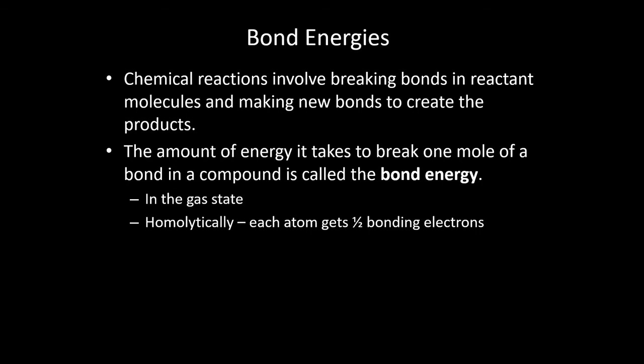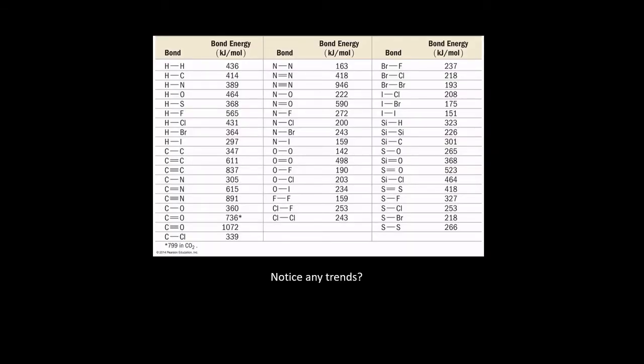And so if we look at some bond energies here, at first it just looks like a whole bunch of massive numbers and letters. But we can find some trends here. There's one trend in particular that is easy to see. So for example, if we look at these three bonds here: carbon-carbon single, carbon-carbon double, and carbon-carbon triple bonds. If we compare those three, as you would expect, because this is fairly intuitive, as you go from single to double to triple bonds, the bond strength increases. The bonds are stronger if there are more bonds. And this should be pretty intuitive.